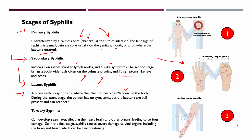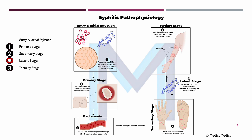During the latent stage, the person has no symptoms, but the bacteria are still present and could later reappear. And if they do, we then enter tertiary syphilis. Tertiary syphilis can develop years later, affecting the heart, brain, and other organs, leading to serious damage. In the final stage, syphilis causes severe damage to vital organs, including the brain and heart, and these can be life-threatening. So we have: primary stage, secondary stage, latent, and tertiary.